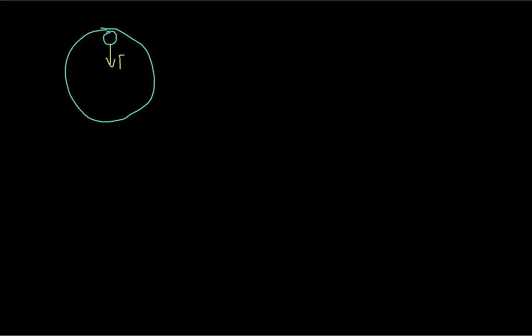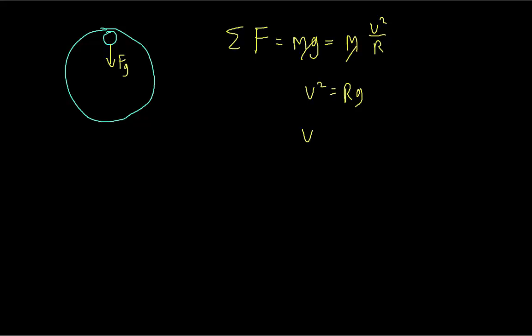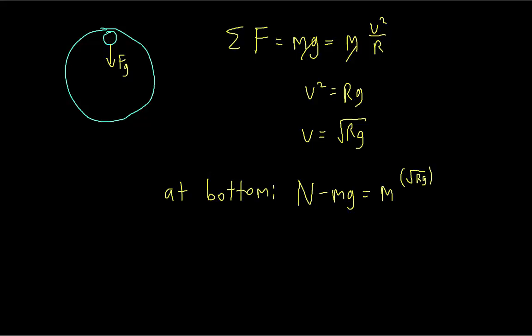Lastly, let's look at how fast the roller coaster would have to be going for the rider to be weightless at the top of the loop. Weight is determined by the normal force you feel, so if the person is weightless at the top, there is no normal force acting on him — only gravity. Solving for the speed, we find that if his speed equals the square root of the radius times g, he would be weightless at the top. We can also find the normal force at the bottom in that case, and it equals 2mg.